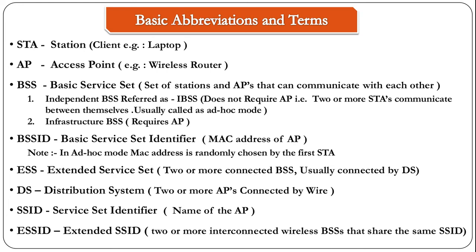The third abbreviation is BSS, which means basic service set. There are two types: the infrastructure BSS, which has an AP and two or more stations connected to it, and the independent BSS, where there is no AP and stations communicate between themselves. The independent BSS is commonly referred to as ad hoc mode.